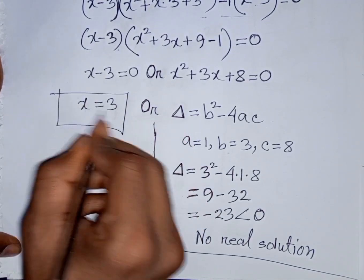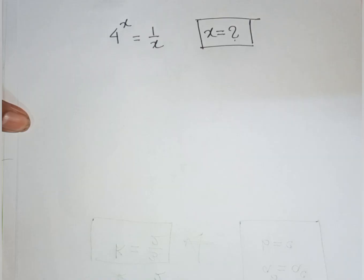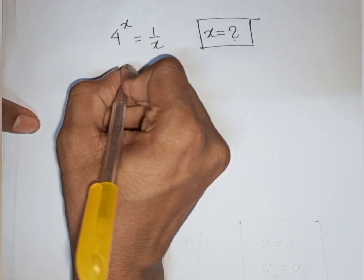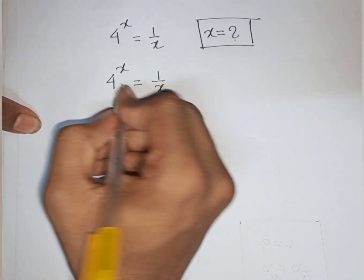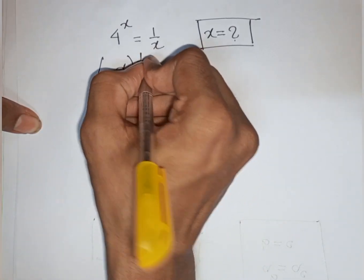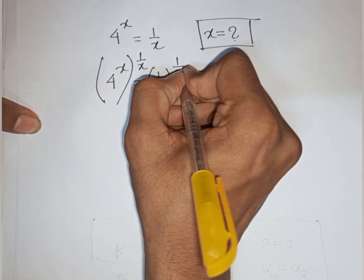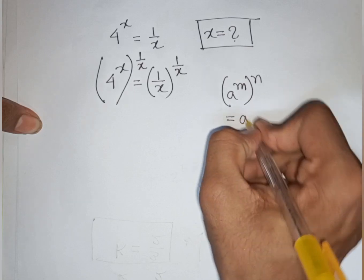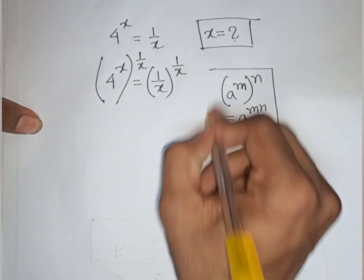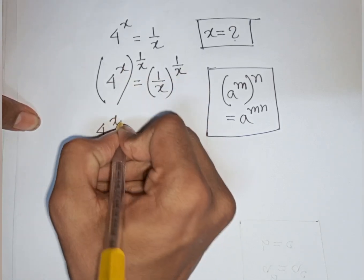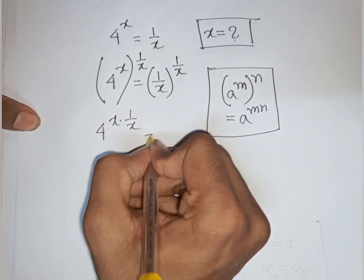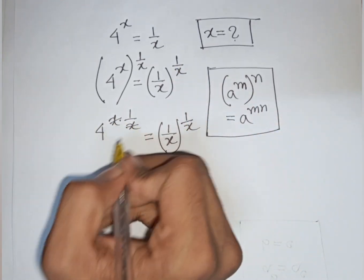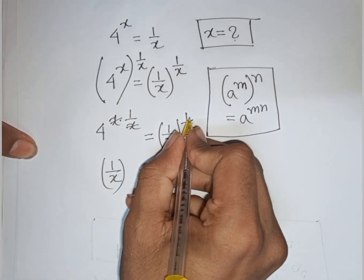So our final answer is x is equal to 3. Now, how to solve 4^x is equal to 1/x — find the value of x. We have 4^x equals 1/x. Now we multiply both sides by the power of 1/x, applying the exponential rule that (a^m)^n equals a^(m times n).